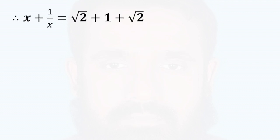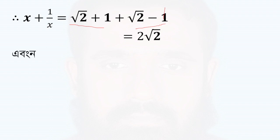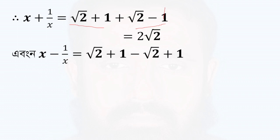x equals root 2 plus 1 and 1 by x equals root 2 minus 1. Adding them: x plus 1 by x equals 2 root 2. Subtracting: x minus 1 by x — x is root 2 plus 1 and 1 by x is root 2 minus 1, so x minus 1 by x equals 2.